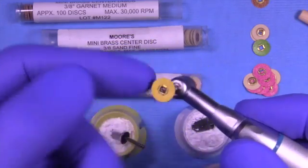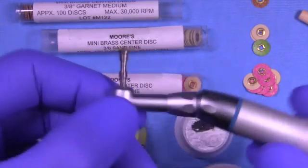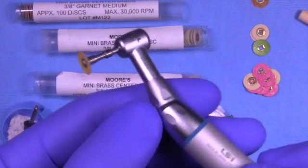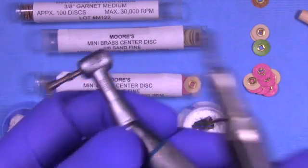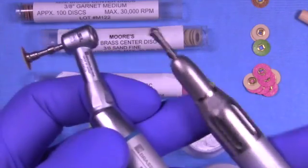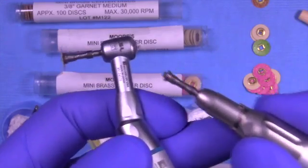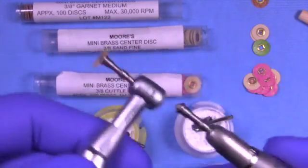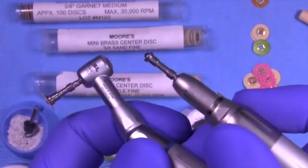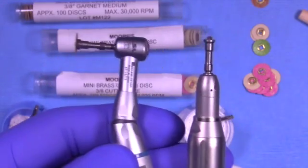One of the important things about finishing castings is to always rotate the disc from gold to tooth structure, which means you're going to be constantly changing the direction of forward and reverse of both the latch type and the straight handpiece.